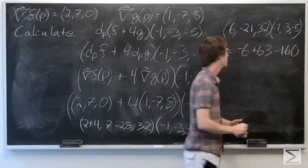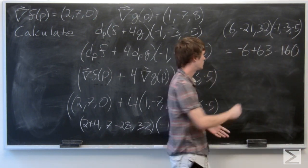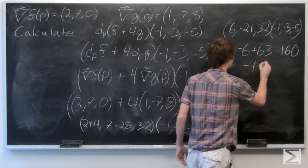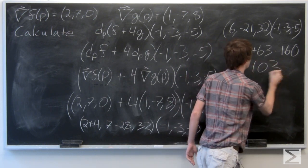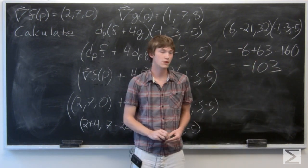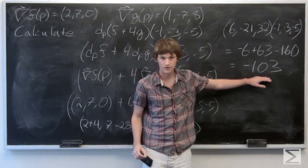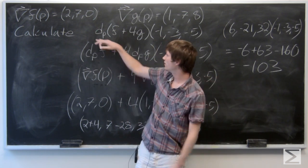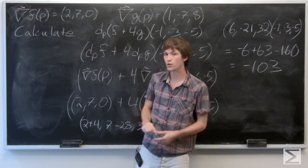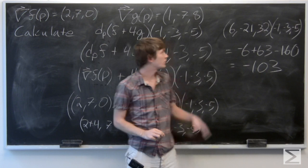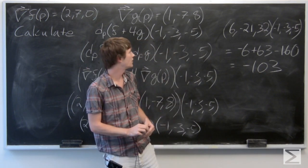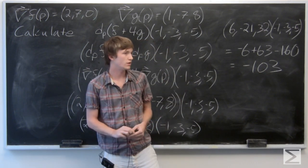Which is equal to negative 103. So the total derivative of f plus 4g with respect to the vector negative 1, negative 3, negative 5 at the point p is equal to negative 103.